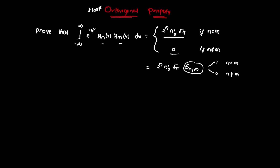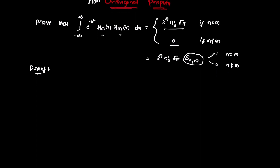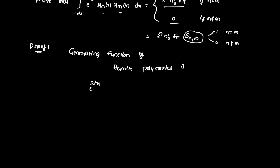State and prove the orthogonal property of Hermite polynomials. Now it is best to prove this and show how to evaluate it. Let's try a proof. What we need to do is write the generating function — it will be easy. We write: sum from n=0 to infinity of H_n(x) divided by n factorial into t^n.